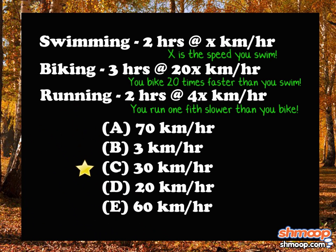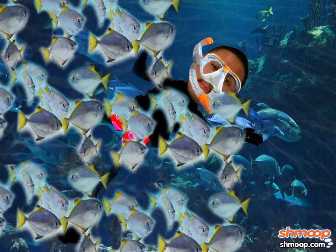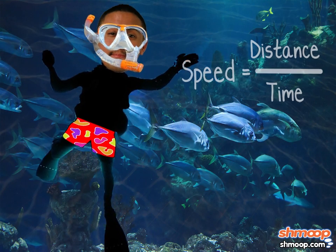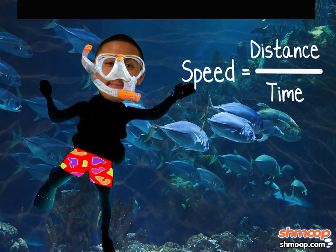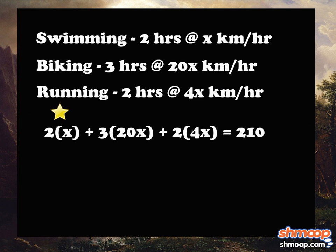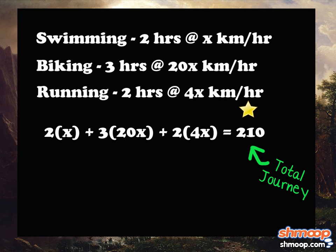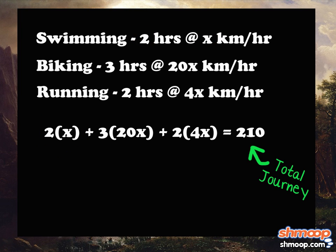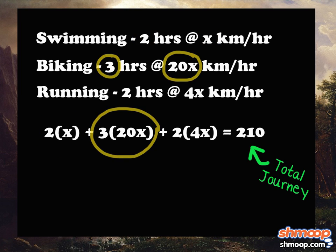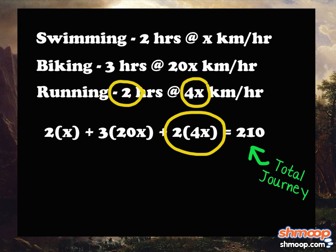Well, here are your choices. Kavi has plenty of time to do the math while he's on his journey. He knows that speed equals distance over time. We can rewrite Kavi's journey as: 2X + 3(20X) + 2(4X) = 210, where the first term is his swimming distance, the second term is his biking distance, and the third term is his running distance.